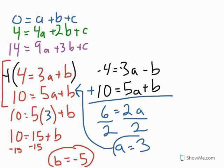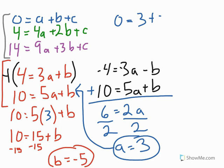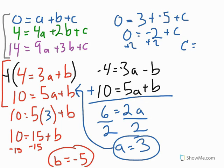Now I have a equals 3 and b equals negative 5. I'll go back to the original three equations and plug in both values to solve for c. The first equation, 0 equals a plus b plus c, is the easiest to use. Plugging in: 0 equals 3 plus negative 5 plus c. 3 plus negative 5 is negative 2, so negative 2 plus c equals 0. Adding 2 to both sides gives c equals 2.